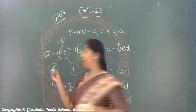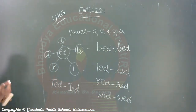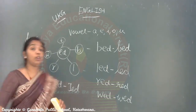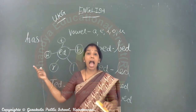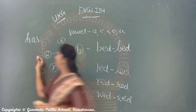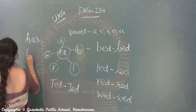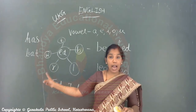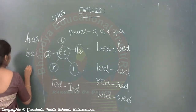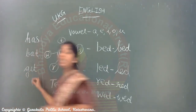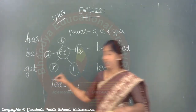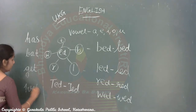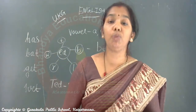I'll just revise the other things like words with the A sound. H-A-S — how do you pronounce it? Has. B-A-T — bad. G-E-D — get. G-E-D, get. W-E-T, wet.